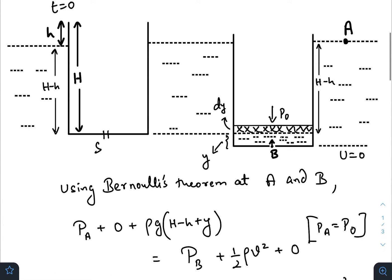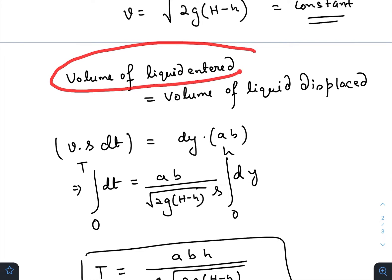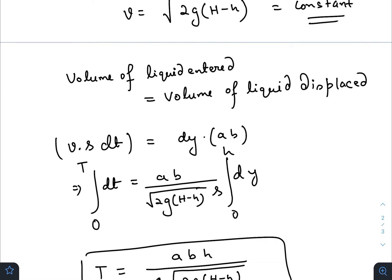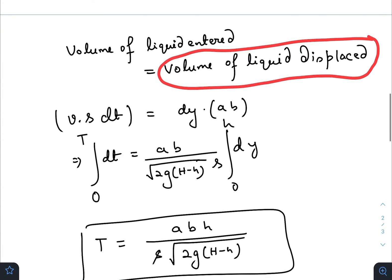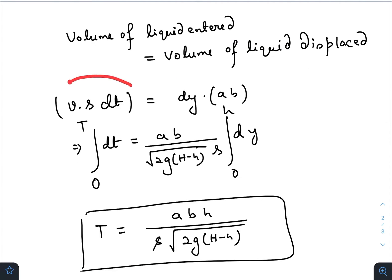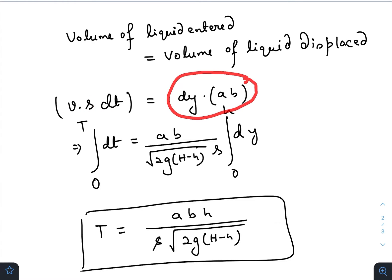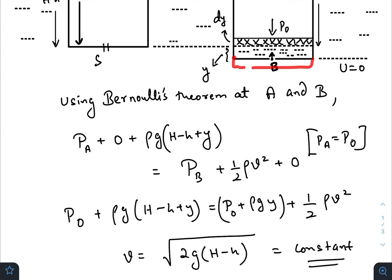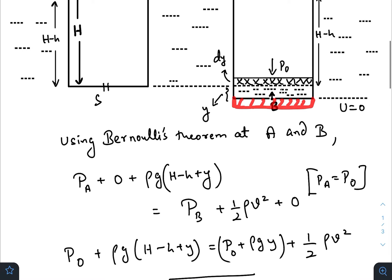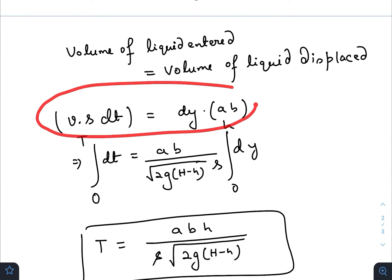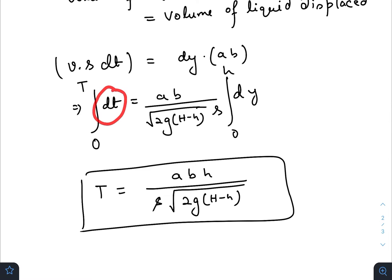This means that until the brim matches the liquid level, the height difference between the outer liquid and the liquid inside the container always remains constant. Now, using volume conservation: in time dt, the volume of liquid entering through the hole equals velocity × area S × dt, and this equals the cross-sectional area of the container (a × b) times the incremental depth dy by which the container immerses.